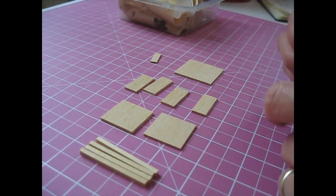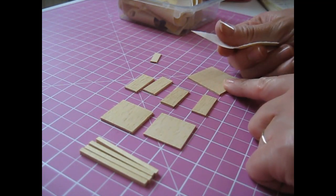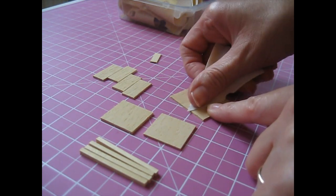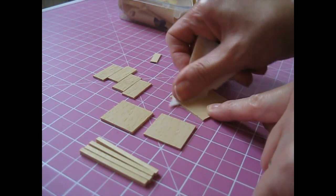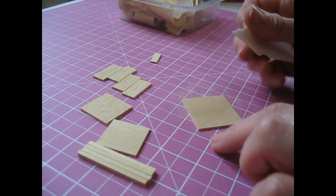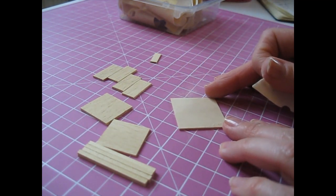Once you've cut your pieces, prepare them by sanding the surface of each piece using fine grade sandpaper. With the piece flat on your work surface, use circular motions to sand. Do that on both sides and that will give us a nice smooth surface for paint.